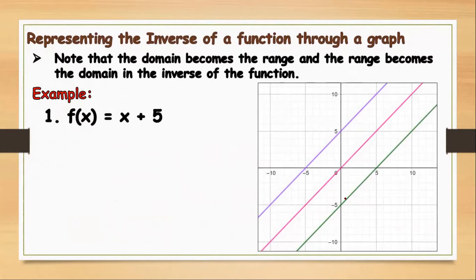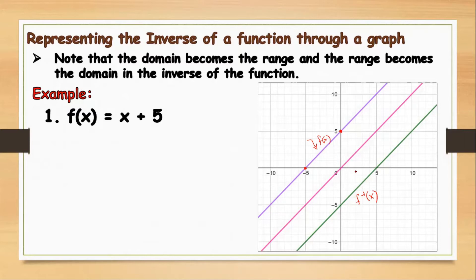If you check the graph, this is your f(x) = x plus 5. When x equals negative 5, your y is 0, and when x is 0, your y is positive 5. This is your f of x. And this green line is your f inverse of x, which is x minus 5. This pink line represents the axis of symmetry. It means that when you fold this graph along the line of symmetry, you will have identical parts when you overlap them. So this point will be partnered to this point. That's how we graph it.